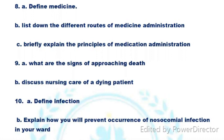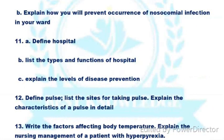B. Discuss nursing care of a dying patient — 10 marks. Define infection — 10 marks. Explain how you will prevent the occurrence of nosocomial infection — 10 marks. Define hospital and list the types and functions of hospital — 10 marks. Explain the level of disease dimensions — 10 marks.